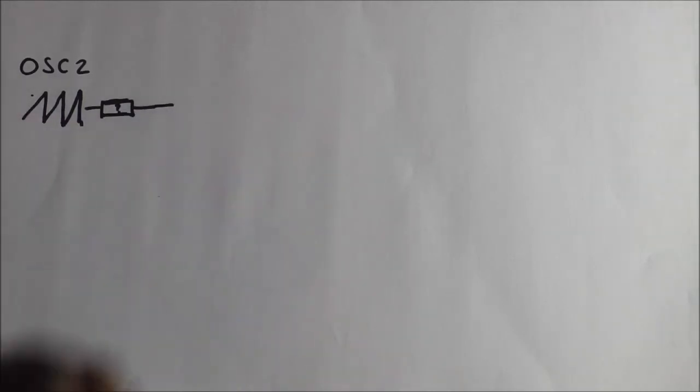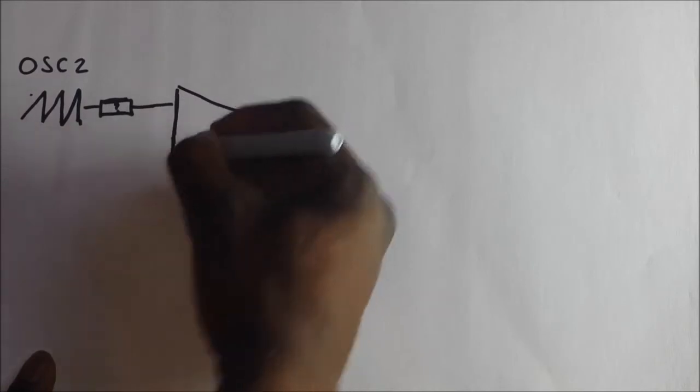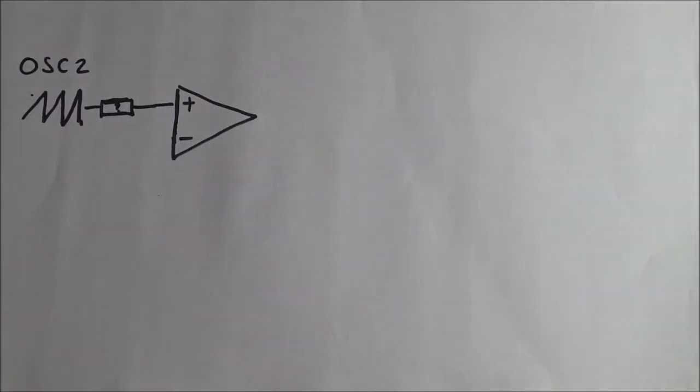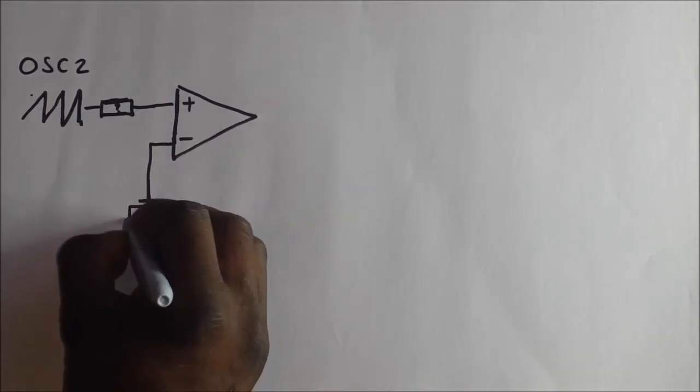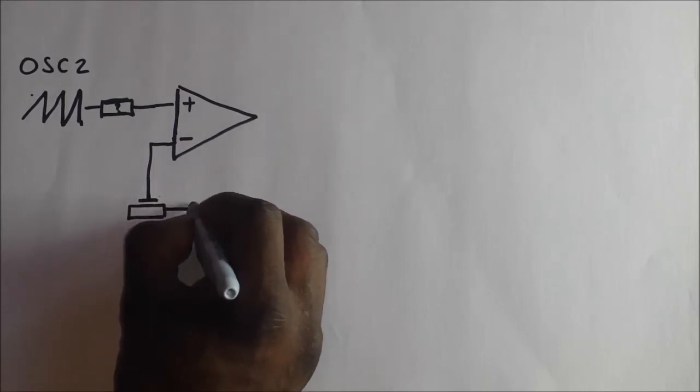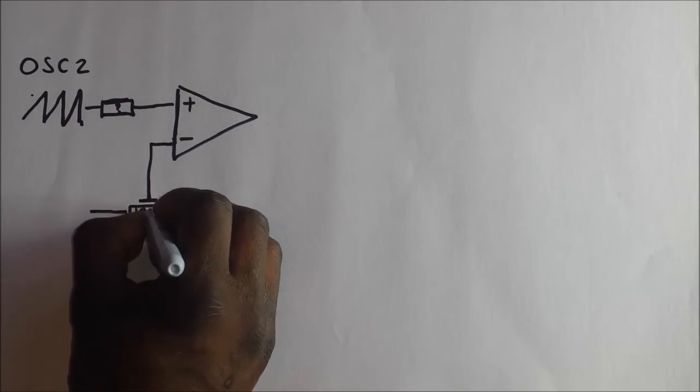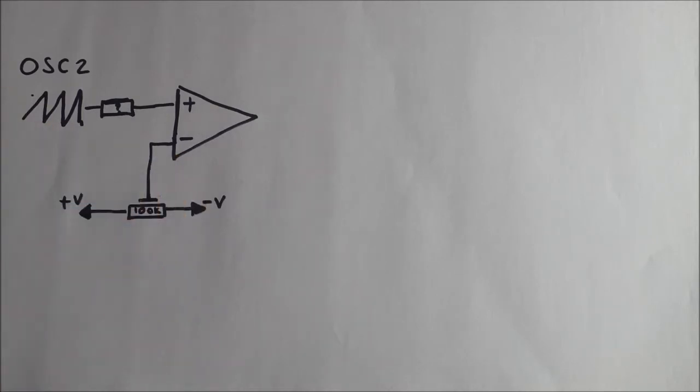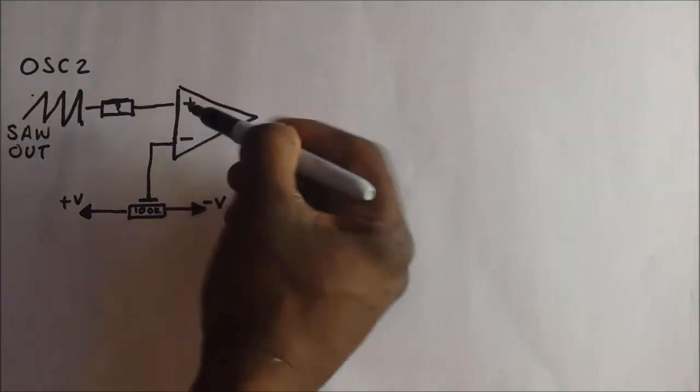So it comes out of the op amp and then what we do is we will send that into the non-inverting side of an operational amplifier, which is the plus, inverting will be the minus side. And on the minus side I will use a potentiometer trimmer, very small trimmer as a voltage divider to the plus voltage and minus voltage respectively. So let's just call that 100k just to keep it nice and tidy, so 100k and that's our voltage divider.